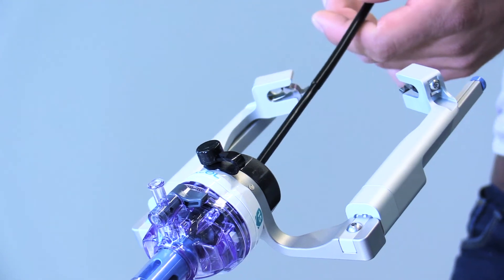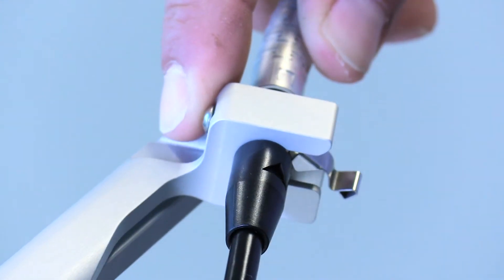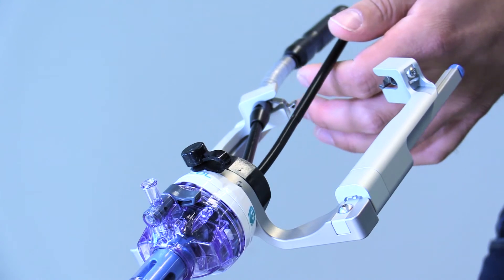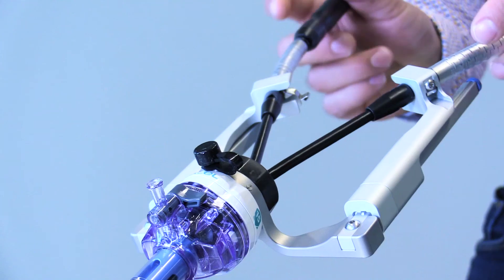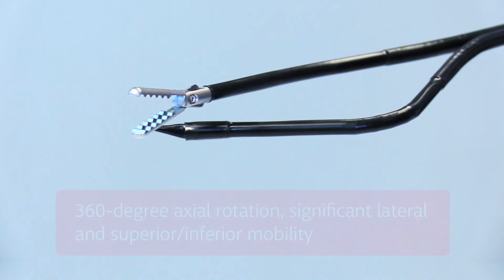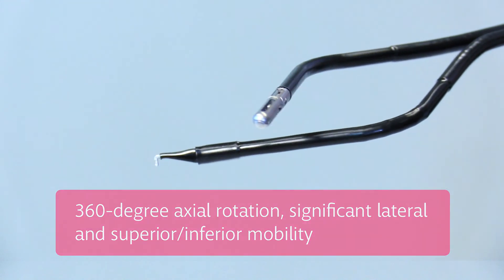The Symphonics articulating instruments are locked into position with hands-free instrument clamps to activate triangulation of the end effectors and enable independent anterior-posterior movement. Each instrument is capable of 360 degree axial rotation as well as significant lateral, superior, and inferior mobility.